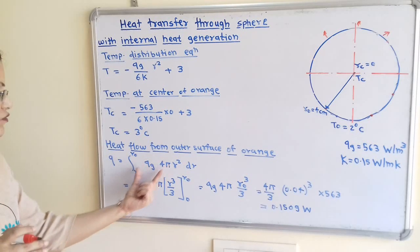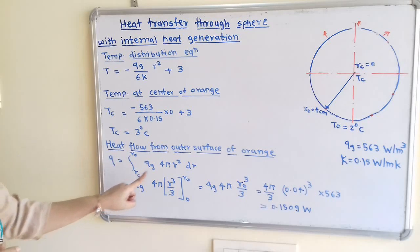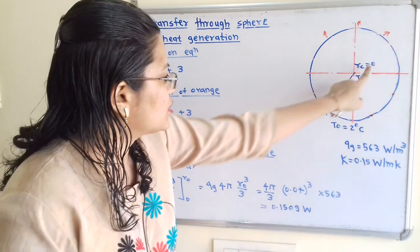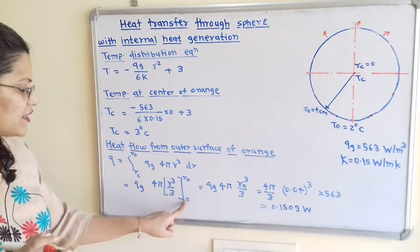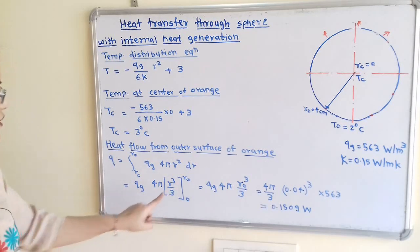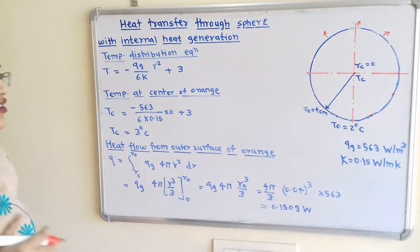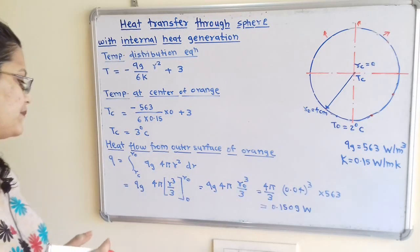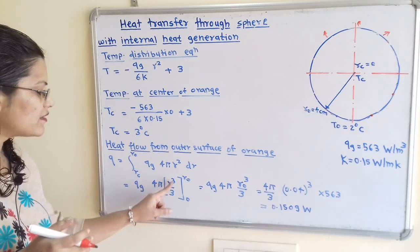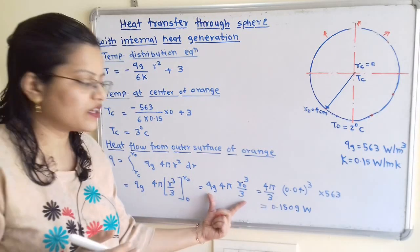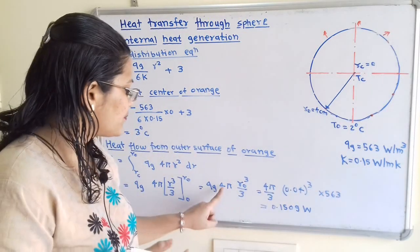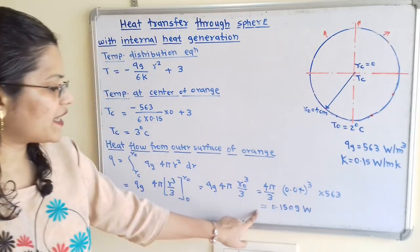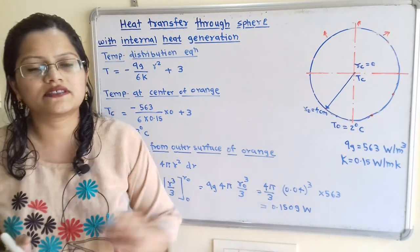Since QG and 4π are constants, Q = QG · 4π · [R³/3] from 0 to RO. The lower limit gives 0, so Q = QG · 4π · RO³/3. Substituting QG = 563 and RO = 0.04 m: Q = 563 × 4π × (0.04)³/3 ≈ 0.1509 Watts. This is the answer to the second question.